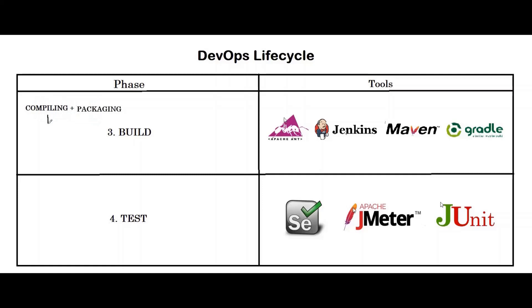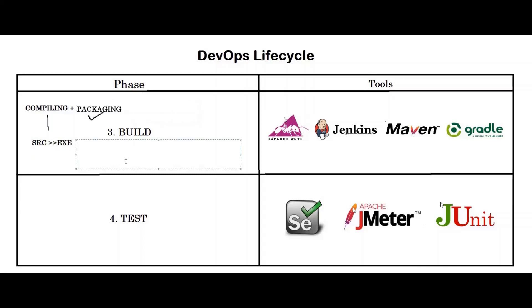Then comes the third phase: build. Building code means compiling the code plus packaging the code. Compiling means converting the source code written by developers into executable code or binary. Once compiled, the complete code is packed into a single deployable file — that is called packaging. For example, if developers write code in Java, the compiled class files are converted into a single deployable file like a WAR file or JAR file. The tools used in the build phase are Apache Ant, Jenkins, Maven, and Gradle.